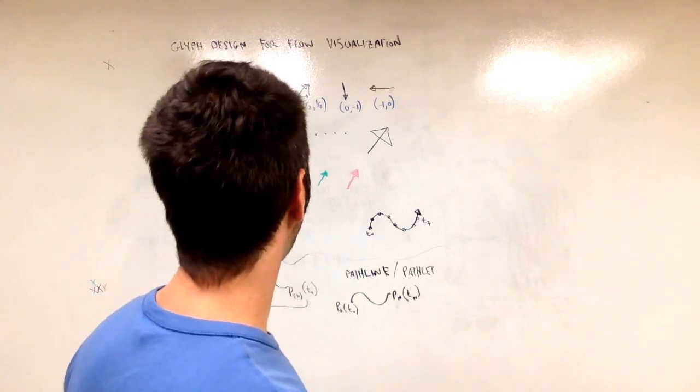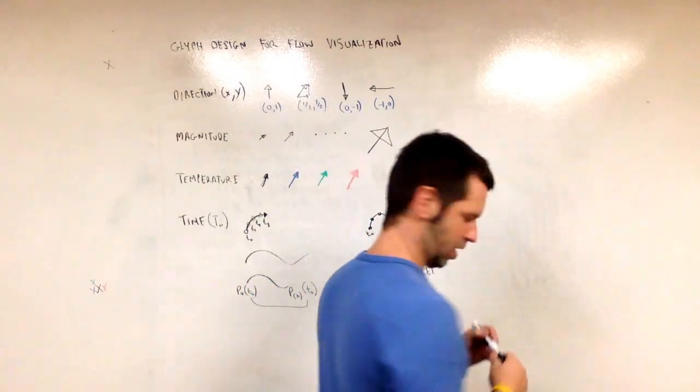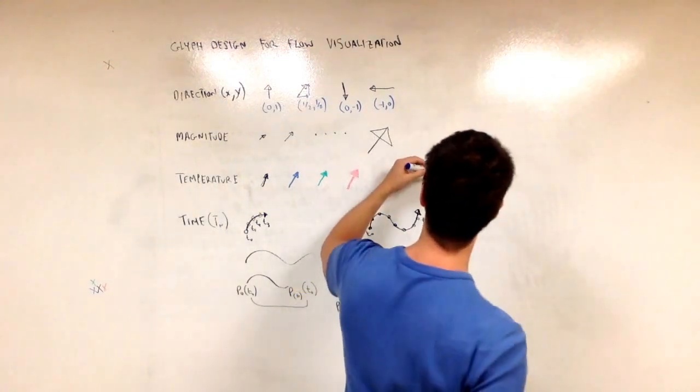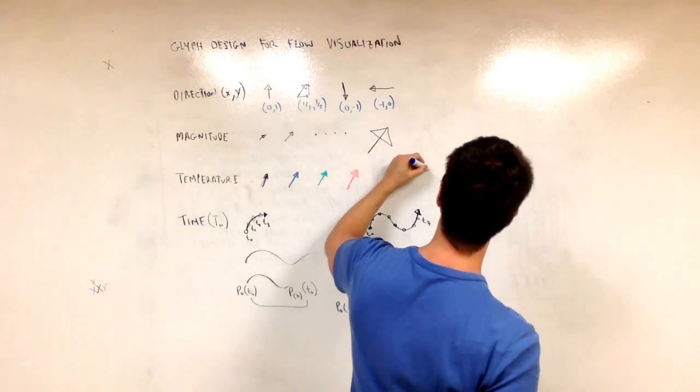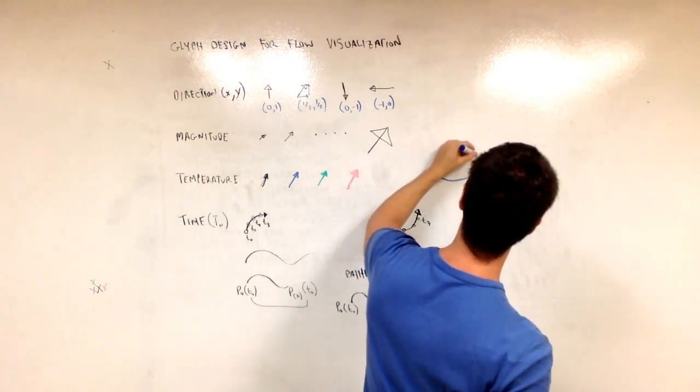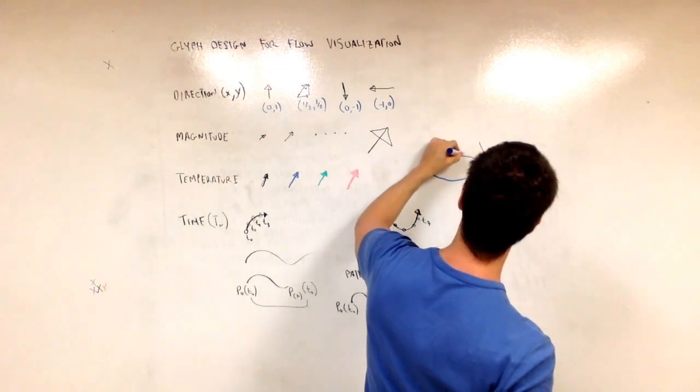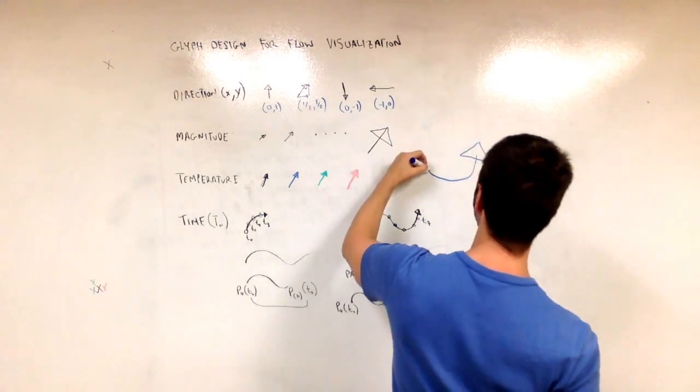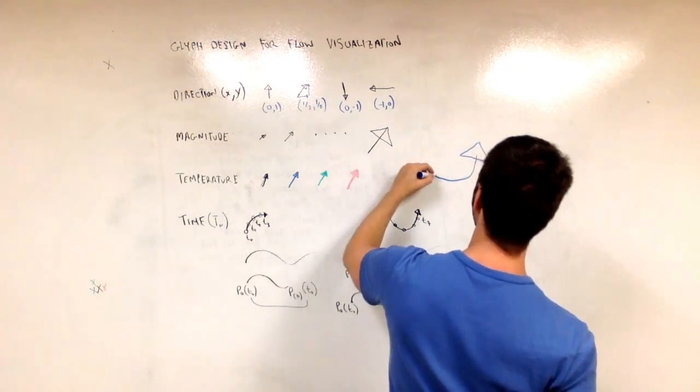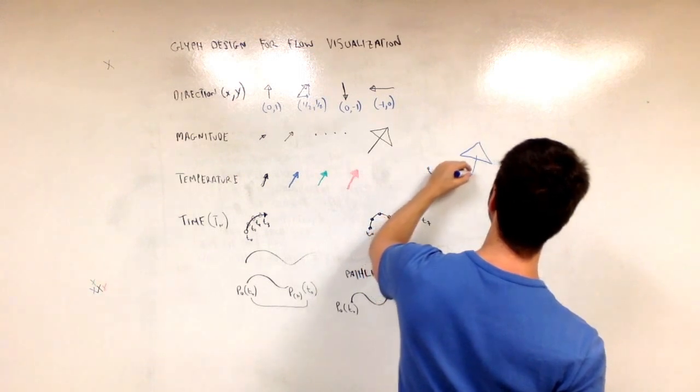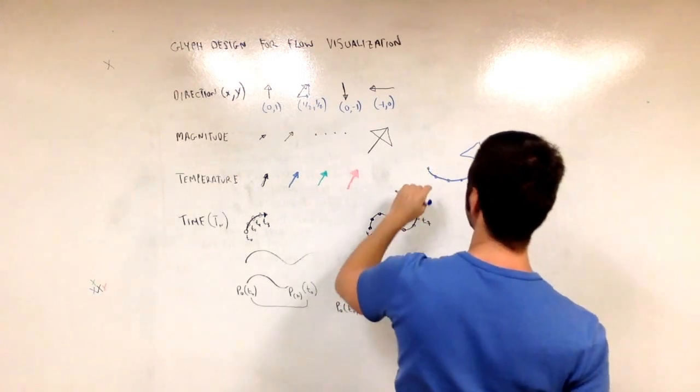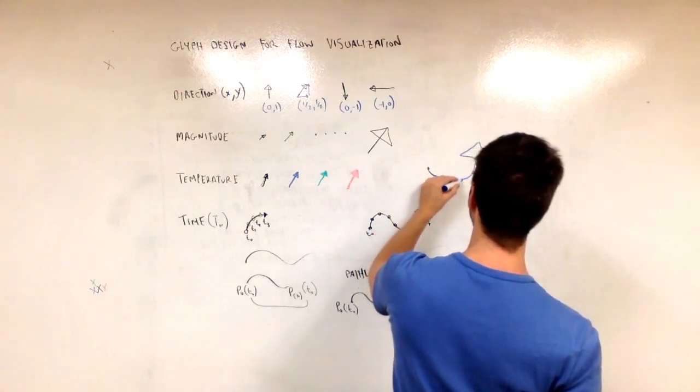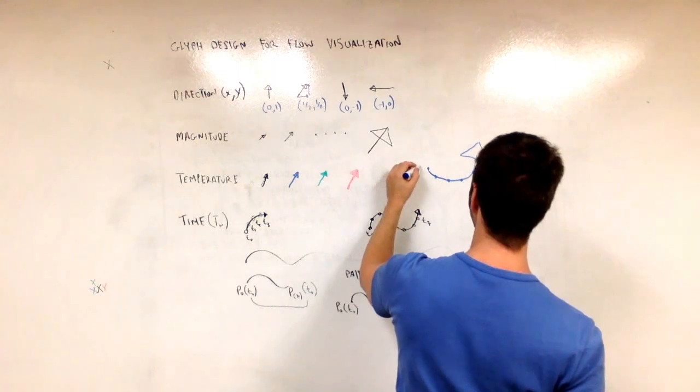So I'll use blue in this case. And I can use a very big arrowhead. So I have a big magnitude. I have the direction encoded because the curve is always tangent to the flow. And then I have the time encoded. I have the time encoded in the curve. T naught to 1, 2, 3, 4, 5, T5.